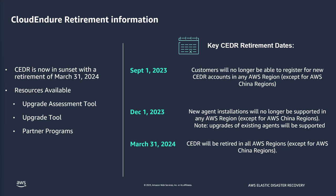Upgrading existing agents will still be supported. And then finally, March 31st 2024, CloudEndure DR will be retired in all AWS regions except for China regions. That means the tool will no longer work and we'll need to adjust the DR tool at that point. The idea here is to upgrade the tool as soon as you can, but definitely before this March 31st 2024 date.